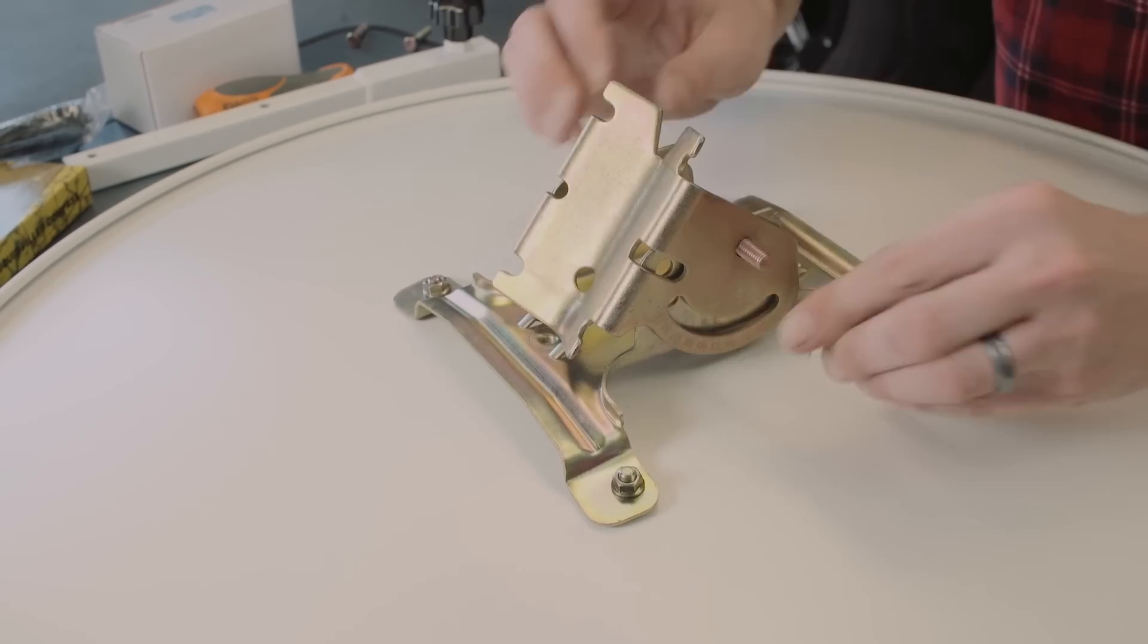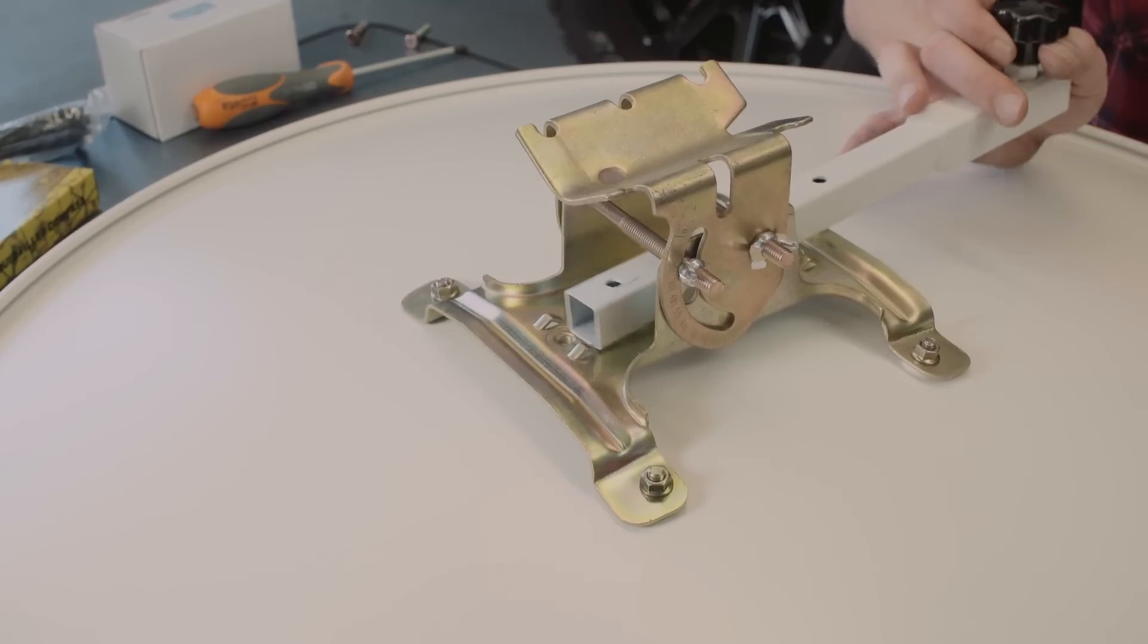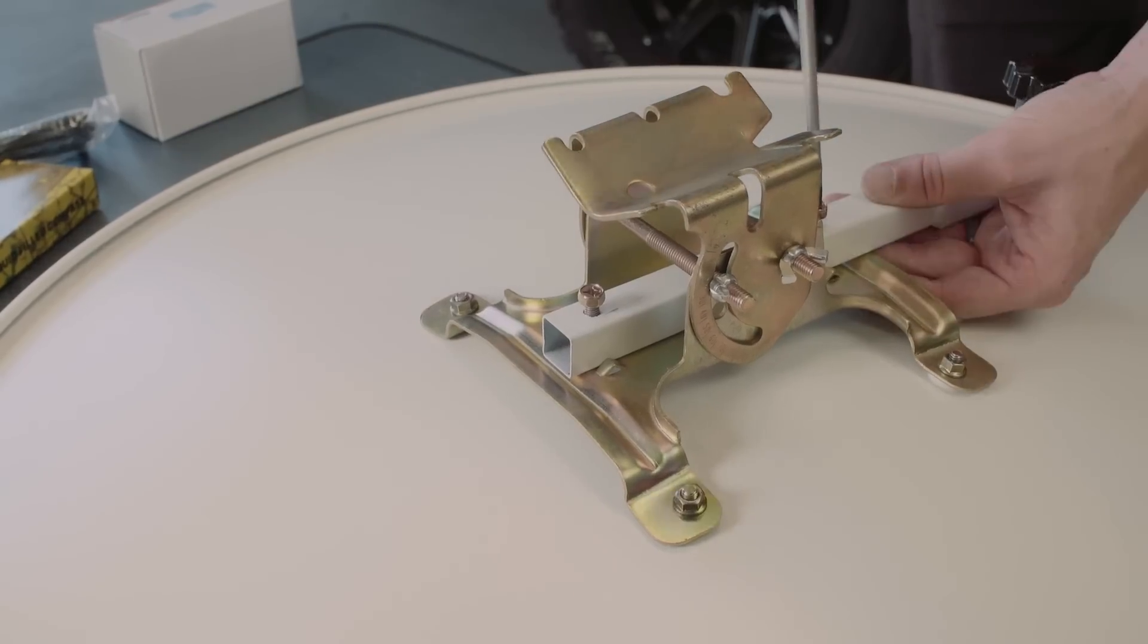Use the supplied hardware to secure the brackets and finger tighten the wing nuts. Insert the first LNB arm into the bracket and secure with supplied screws.